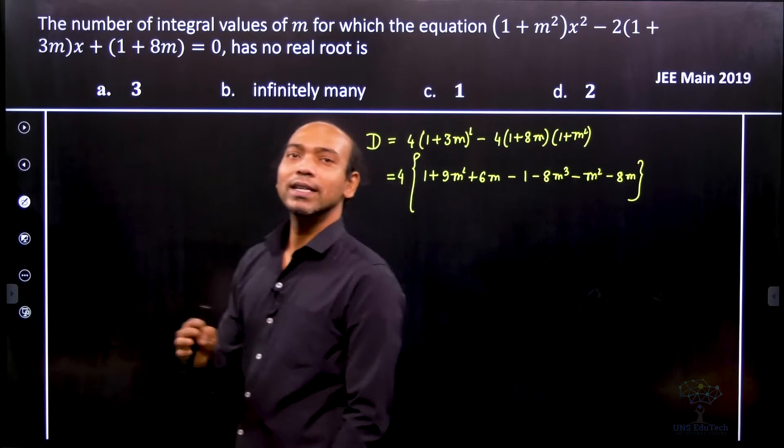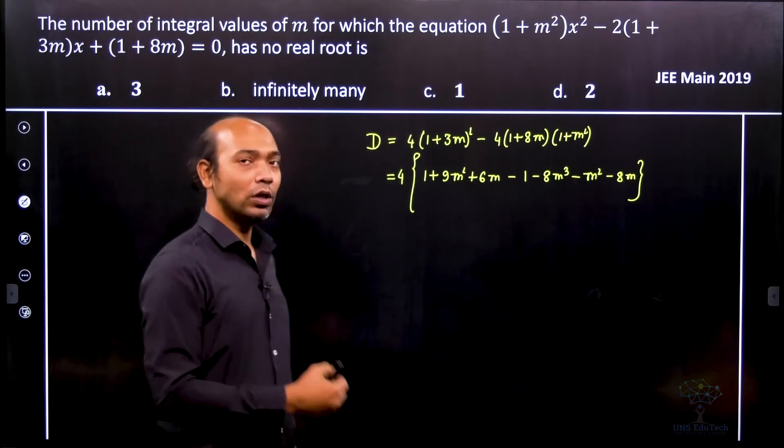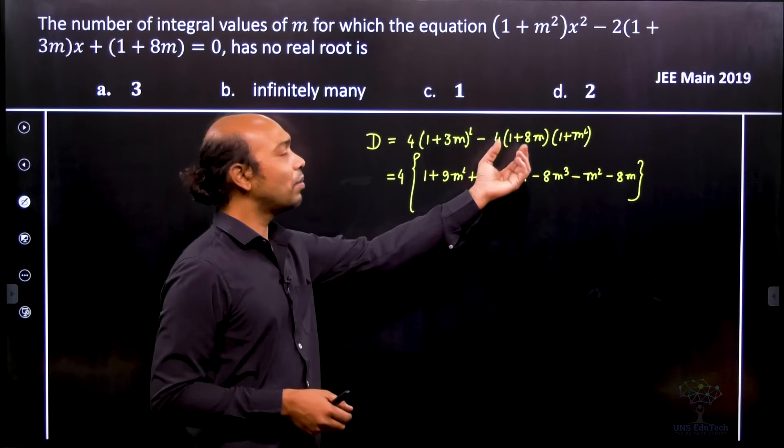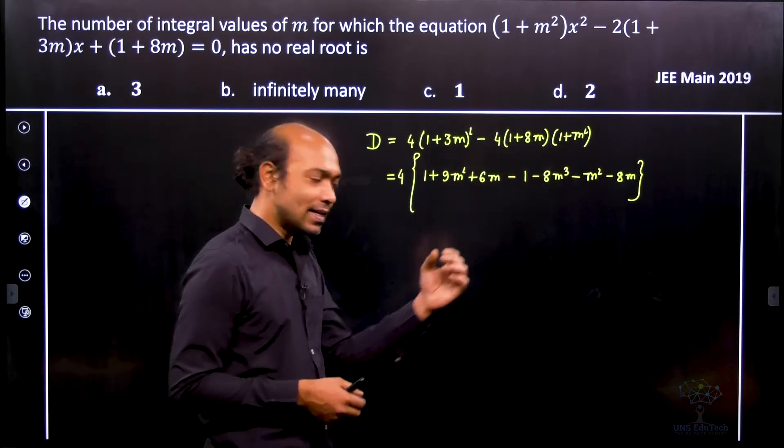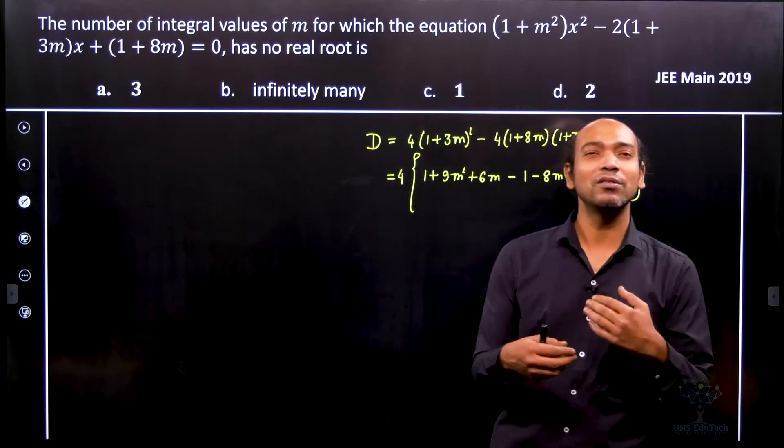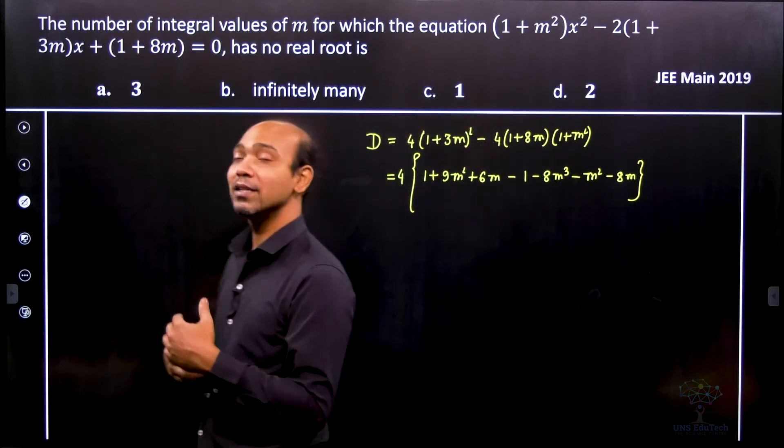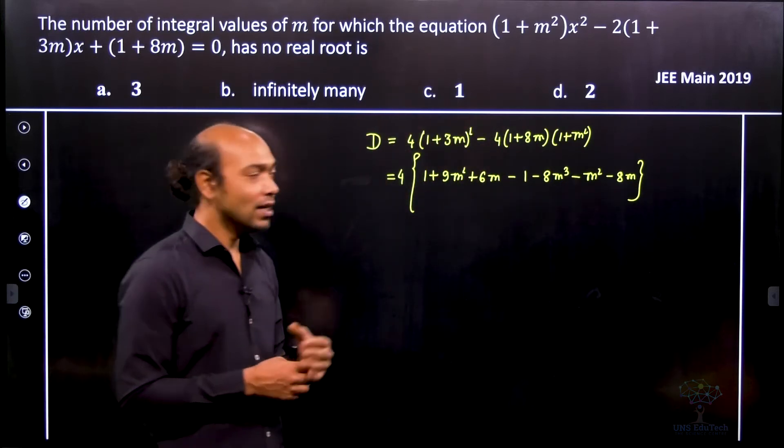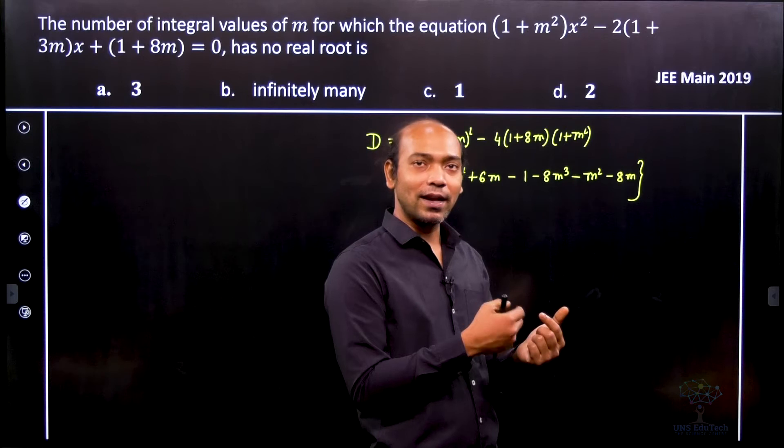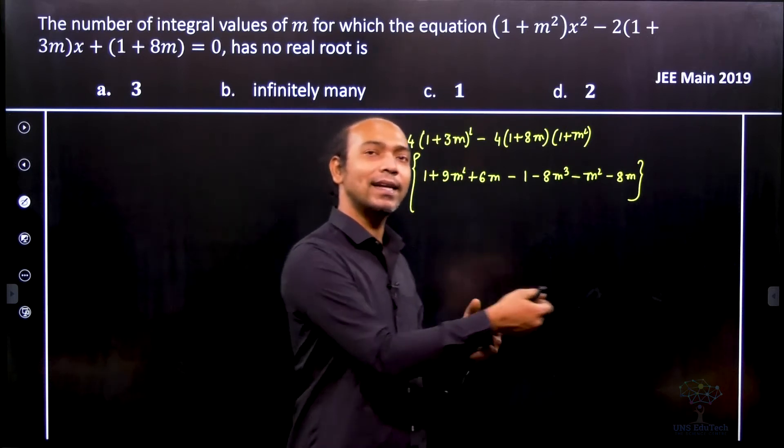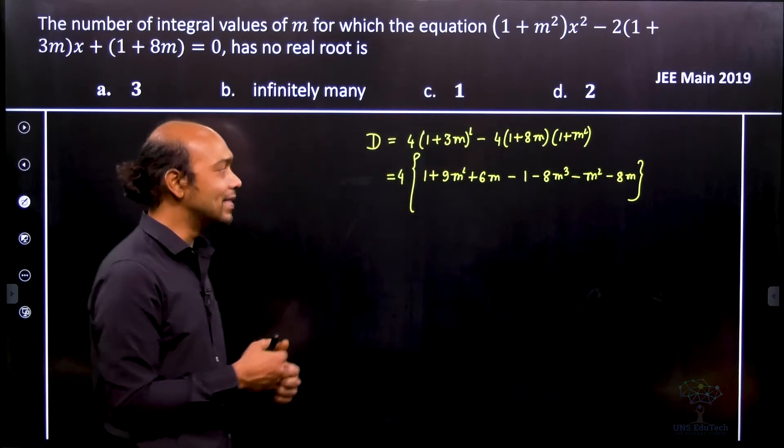Now obviously we need to simplify it. Whenever you see that, whenever it is (1 + 8m)(1 + m²), sometimes multiplication is not that easy because we don't have that tendency. So sometimes we can replace it like m² + 1, 8m + 1. You will see that calculation will be very easy.